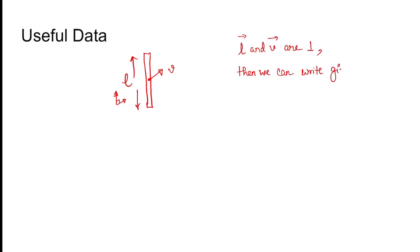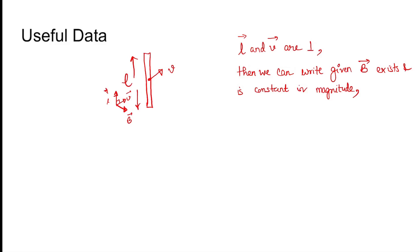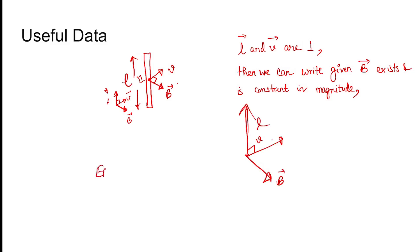The B vector is radially outward. All three vectors — L, V, and B — are mutually at 90 degrees to each other. So for example, this is L, this is V, and this is B. With all three perpendicular, the EMF induced is BLV.